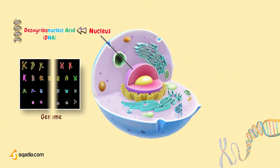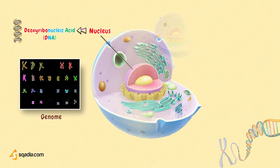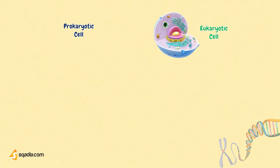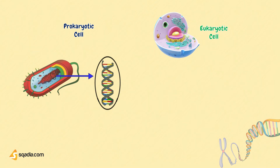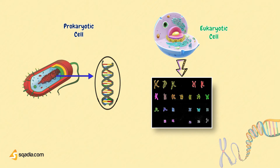The entire set of genetic information found in an organism is referred to as the genome. The DNA of eukaryotic cells is arranged differently from that of prokaryotic cells, and the genomes of most eukaryotes are far more complicated than those of prokaryotes. Prokaryotes have only one chromosome, which is typically a circular DNA molecule and contains their whole genome. The genomes of eukaryotes, in contrast, are made up of several chromosomes, each of which contains a linear DNA molecule.